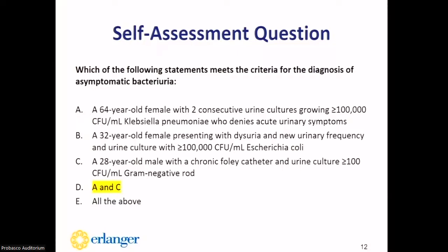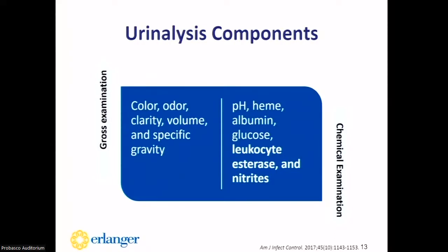Now that we've differentiated between ASB and UTI, let's talk about urinalysis—the importance of appropriate ordering and the different components relevant when discussing ASB. Generally, we can look at urine in two ways: gross examination, including color, clarity, and odor; and chemical examination, which relies on our UA dipstick test, including leukocyte esterase and nitrites, as well as pH, albumin, and glucose for other disease states.